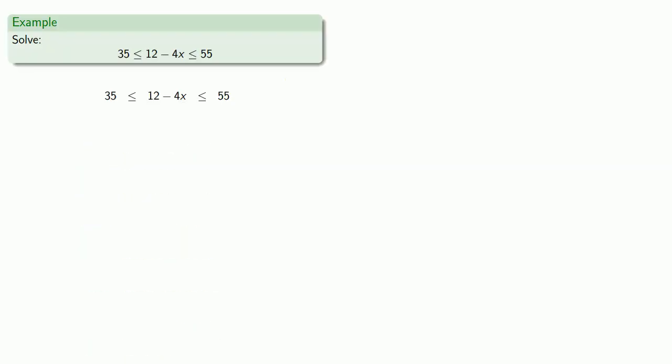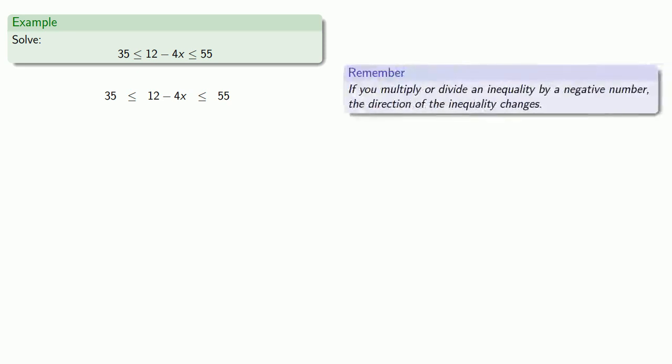So let's solve the inequality 35 less than or equal to 12 minus 4x less than or equal to 55. Now remember, if you multiply or divide an inequality by a negative number, the direction of the inequality changes.